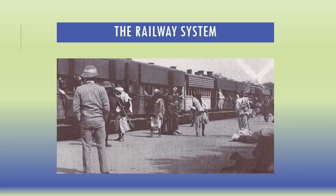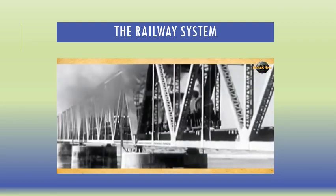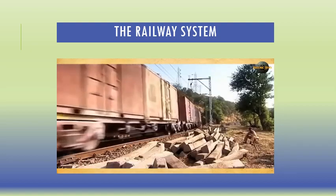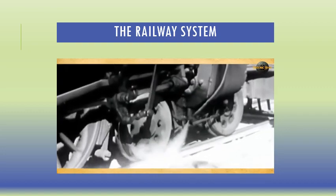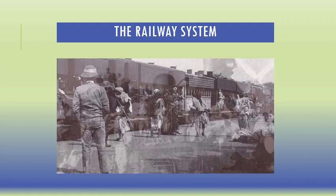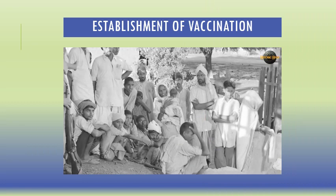Since the British helped out the Indian subcontinent in various ways, they developed a railway system here. We can see the railway lines established that are still running and present today. They also established education and more than 20 universities within the Indian subcontinent, as well as a vaccination system within India.